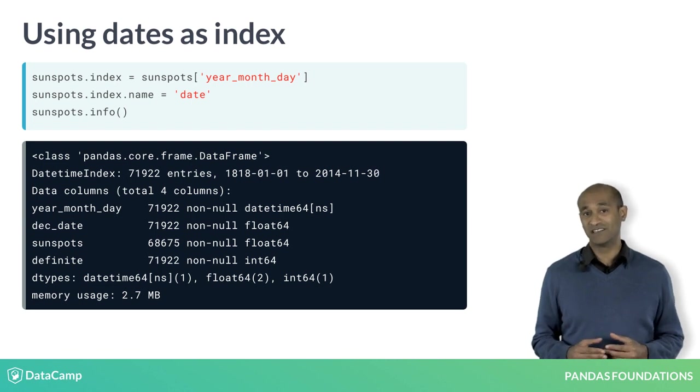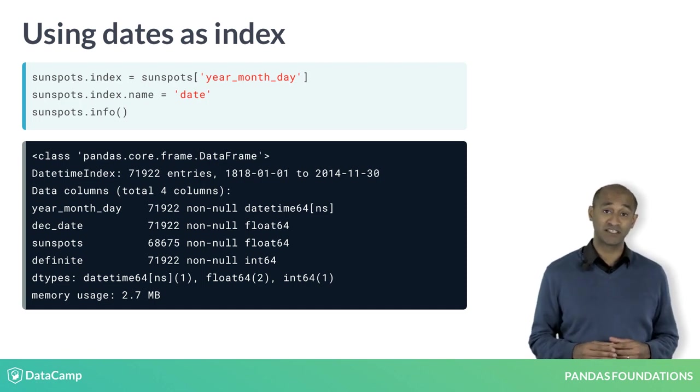The data frame still lacks meaningful row labels as index. The year, month, day column can be assigned as a data frame index using the index attribute. Similarly, assigning dates to the index's name attribute gives a more concise label.